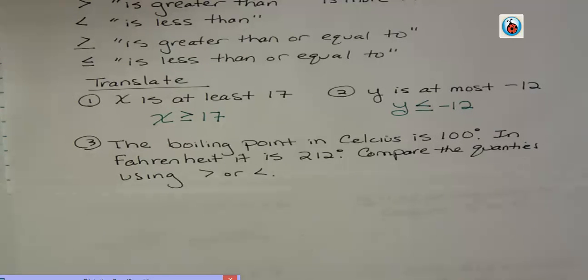Okay, turning to something like this where we want to write a statement using an inequality. The boiling point in Celsius is 100 degrees. In Fahrenheit it is 212 degrees. Compare the quantities using greater than or less than symbols.